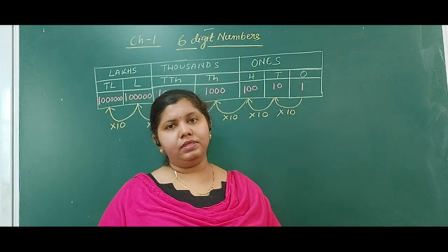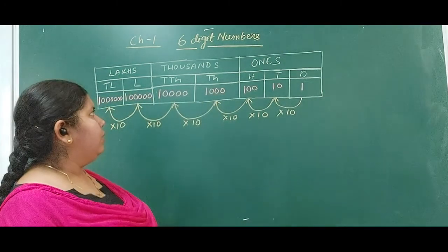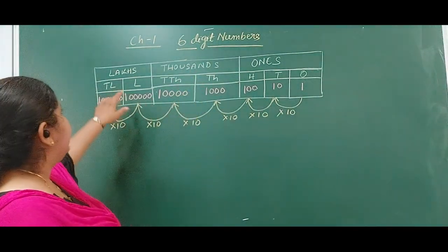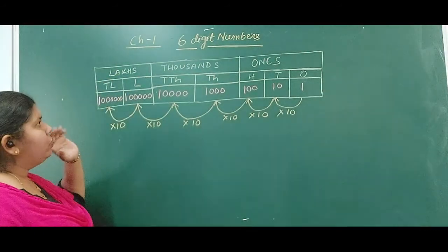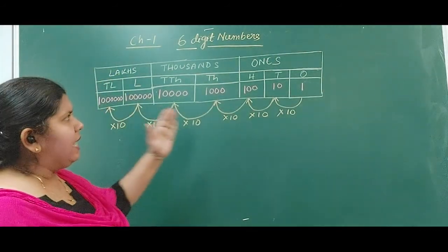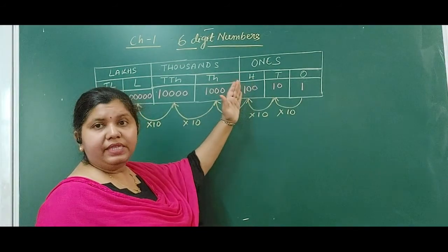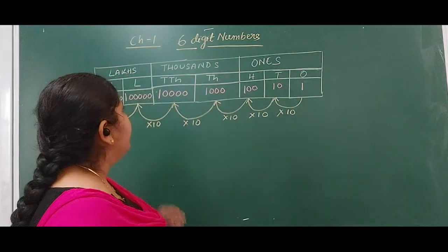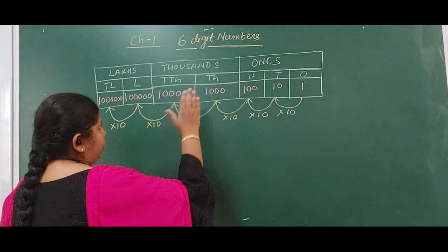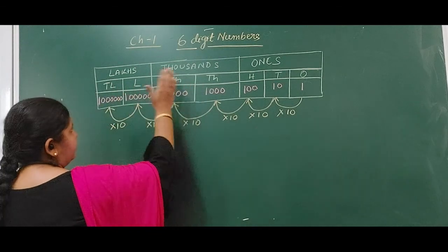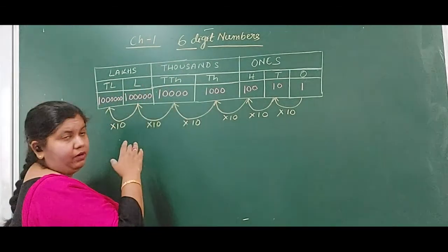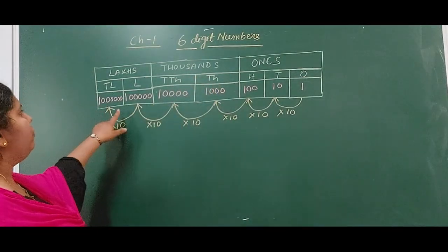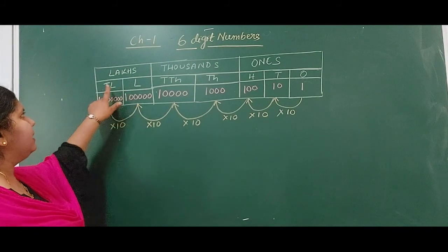Today we are going to see 6-digit numbers. In our last class we read about the ones period and thousands period. Now we will read beyond it — the lakhs period will also come. So we always have 3 sections under the ones period: ones, tens, and hundreds. We have 2 sections in the thousands period: 1,000 and 10,000. In the lakhs period also we have 2 sections: lakhs and 10 lakhs.